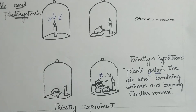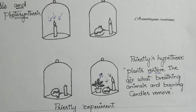Plants take carbon dioxide and release oxygen. Human beings and animals take oxygen and release carbon dioxide. But plants also take oxygen and release carbon dioxide — however, during photosynthesis only, they take carbon dioxide and release oxygen.